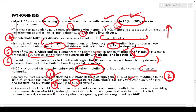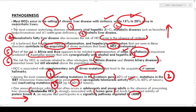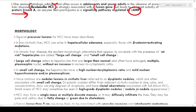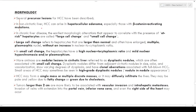One unusual histological subtype — fibrolamellar hepatocellular carcinoma — often occurs in adolescents and young adults in the absence of pre-existing liver disease. It is strongly associated with a fusion gene that leads to aberrant activity of protein kinase A, an enzyme that participates in signaling pathways regulated by cAMP. We will discuss this fibrolamellar variety in detail at the end of this video.